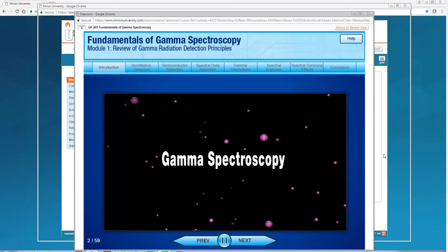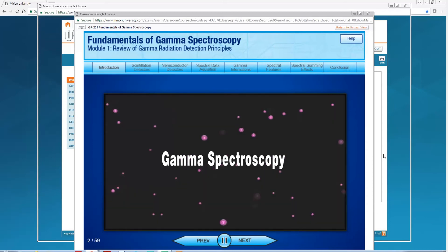Gamma spectroscopy involves the identification and quantification of radionuclides by analysis of a spectrum produced by detected gamma radiation and is probably the most widely used spectroscopy application in the world.